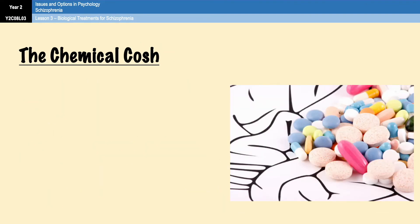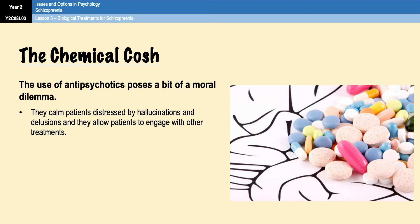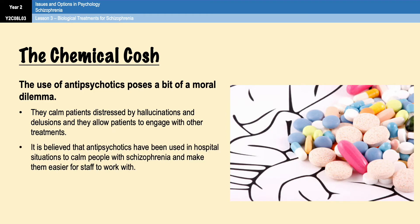This final point is a bit of a discussion point. The use of antipsychotics poses a moral dilemma. On the one hand, the short-term use of antipsychotics is recommended, and they calm patients distressed by hallucinations and delusions, which certainly makes people feel better. Additionally, they allow patients to engage with other treatments like CBT or family therapy, and services such as meeting social workers, which are undoubtedly positive things. However, on the other hand, it is widely believed that antipsychotics have been used in hospital situations to calm people with schizophrenia and make them easier for staff to work with — almost reducing them to a zombie state — rather than for the benefit of the people themselves. They're effectively arguing the drug treatment is more for the staff than for the people with schizophrenia.